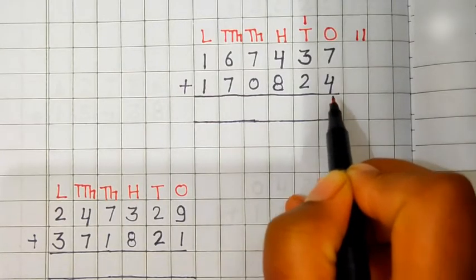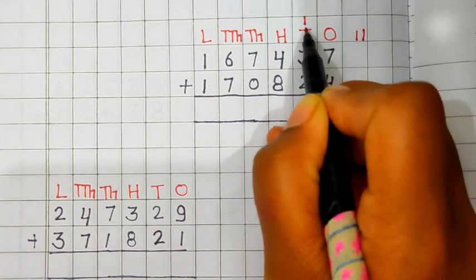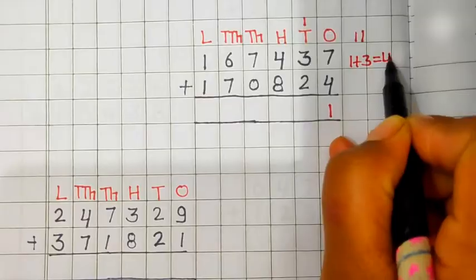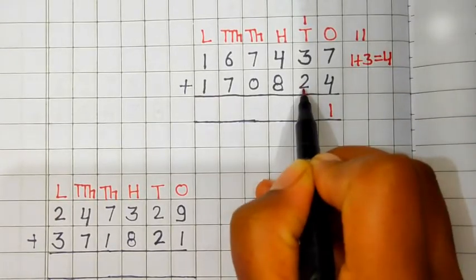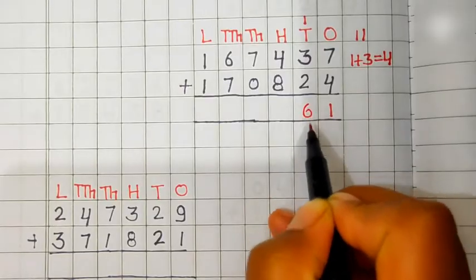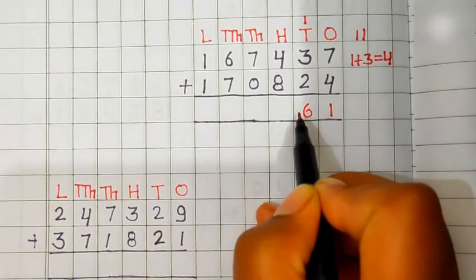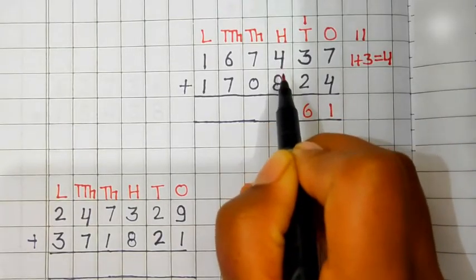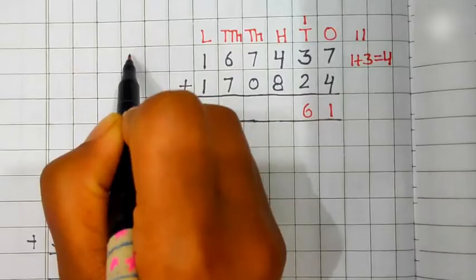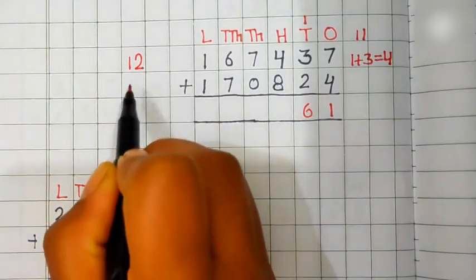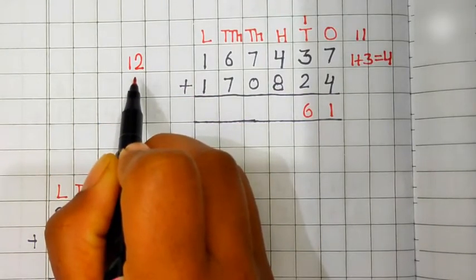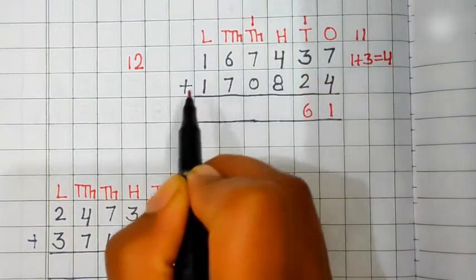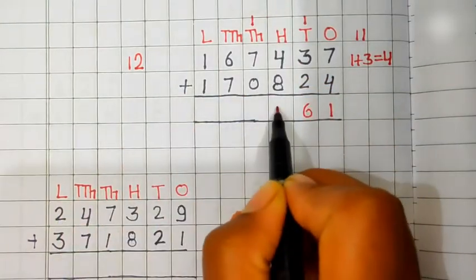Now add the digit at 10 place. 1 carry plus 3 is equal to 4. 4 plus 2 is equal to 6. Then let's add the digit at 100 place. 4 plus 8 is equal to 12. 12 is a two-digit number. We will carry 1 to the 1000 place and 2 comes in the answer.